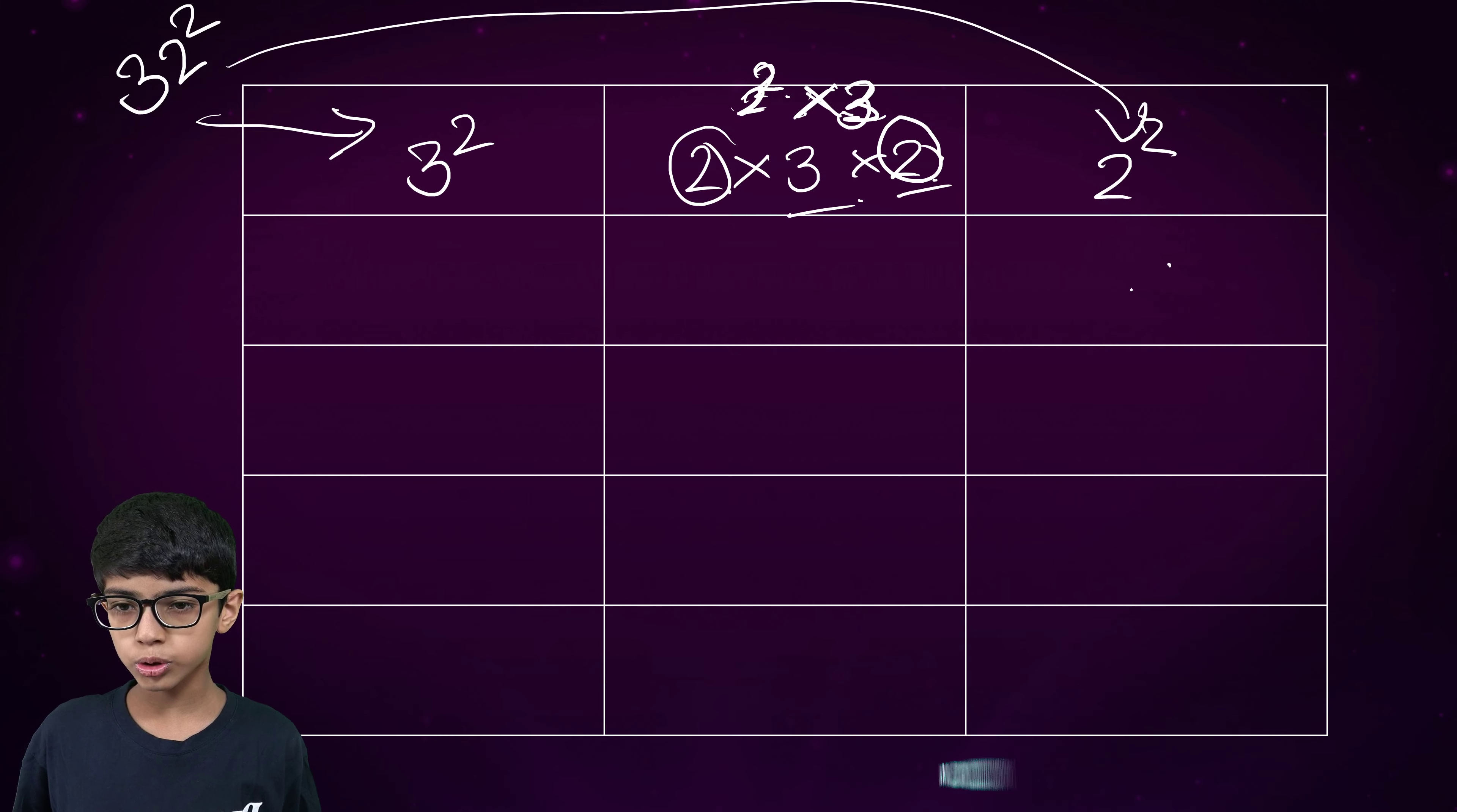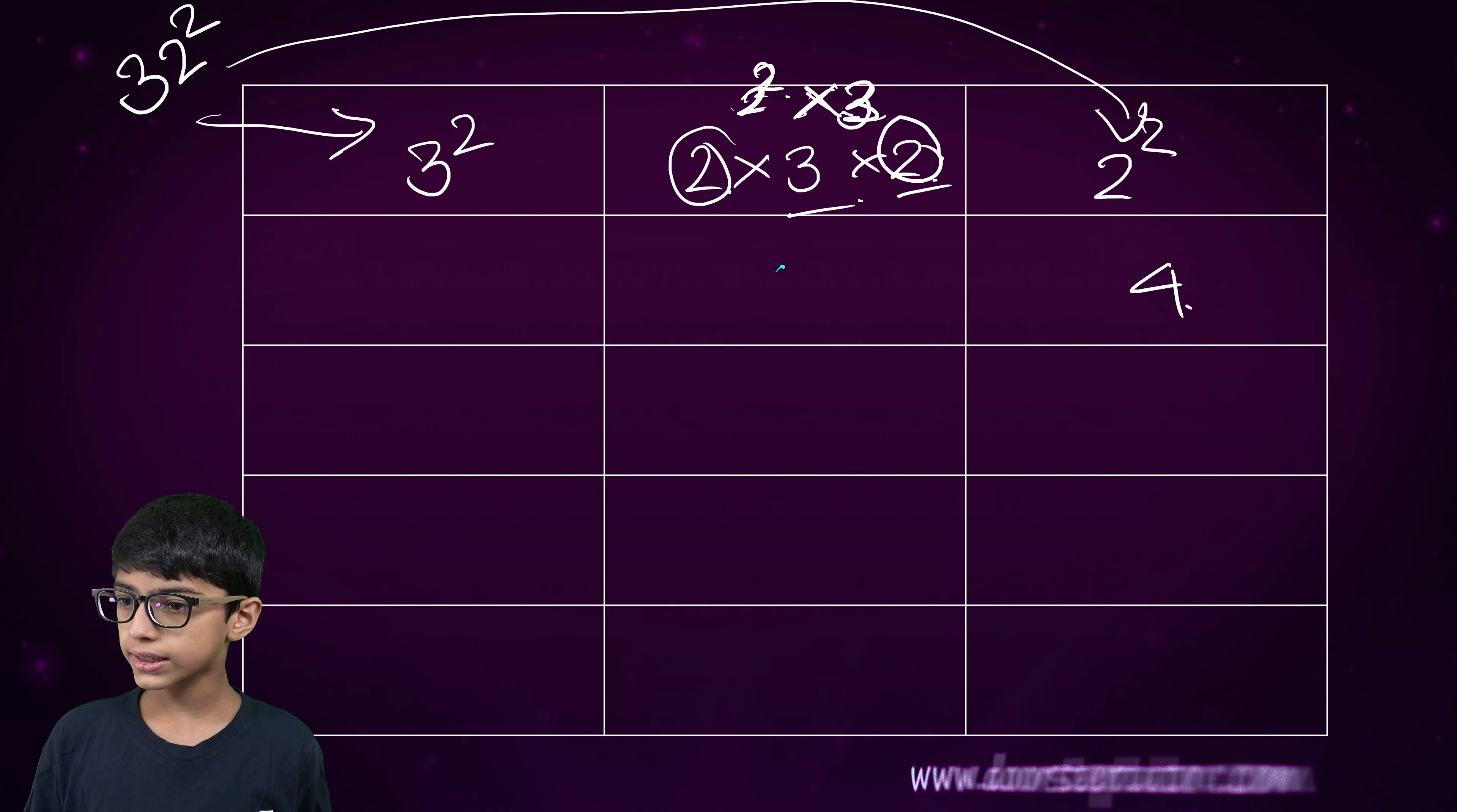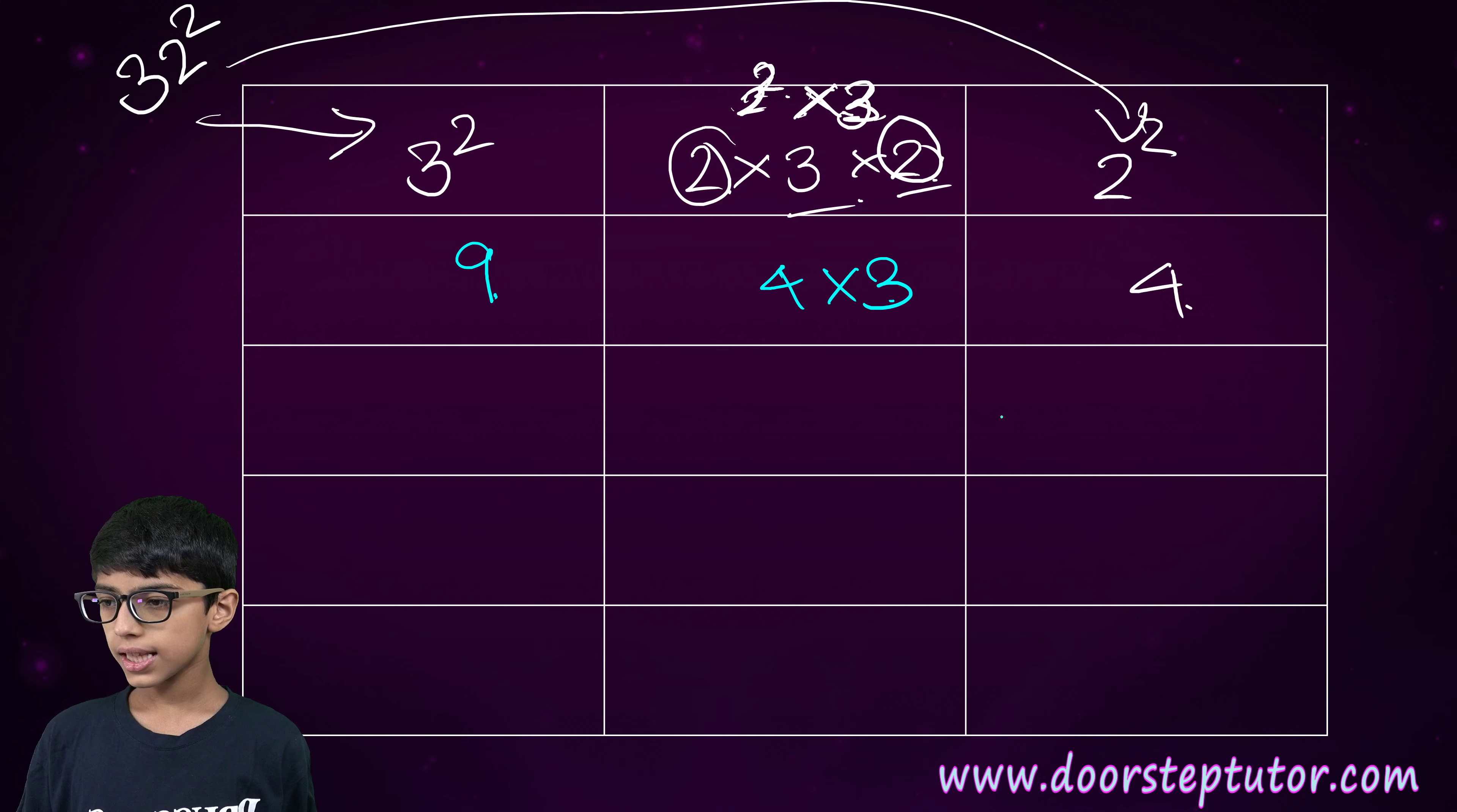Two squares. Four. Then, two square is four into three. And three squares. Nine.